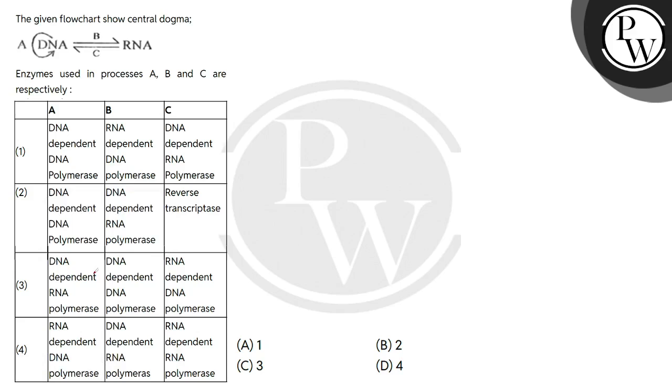So here we have a central dogma structure. We have to tell what is A, what is B, and what is C. Enzymes used in processes A, B, and C respectively. So we have to tell three enzymes basically for this whole central dogma process.